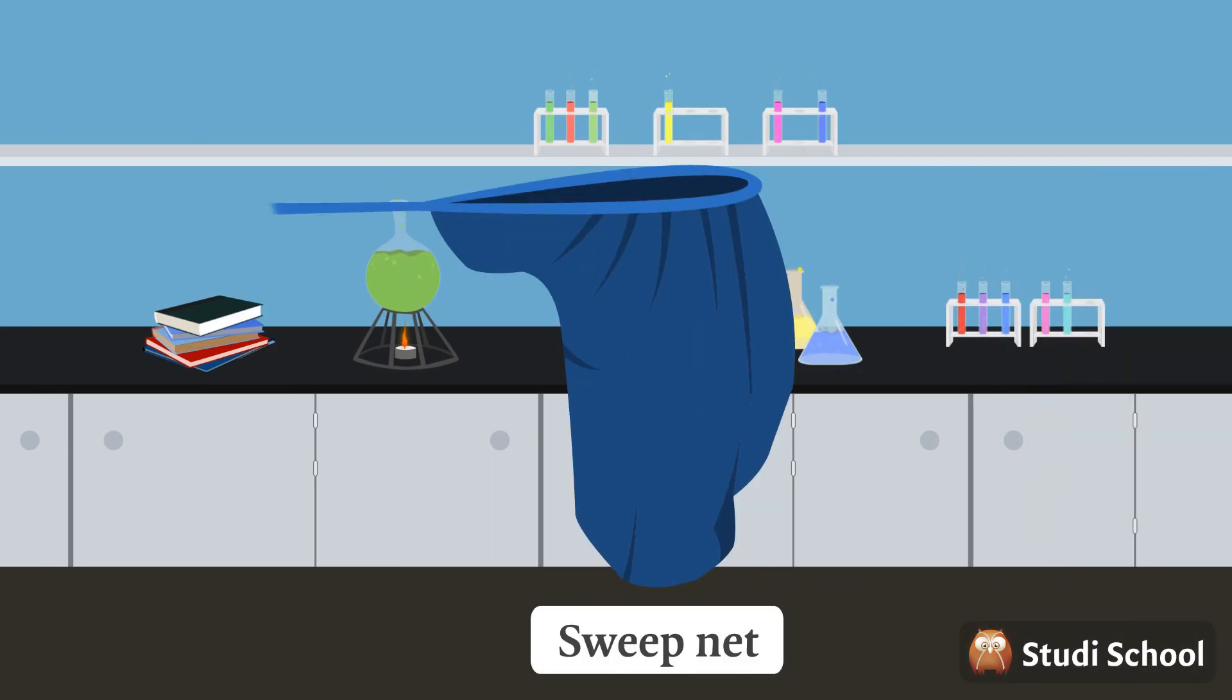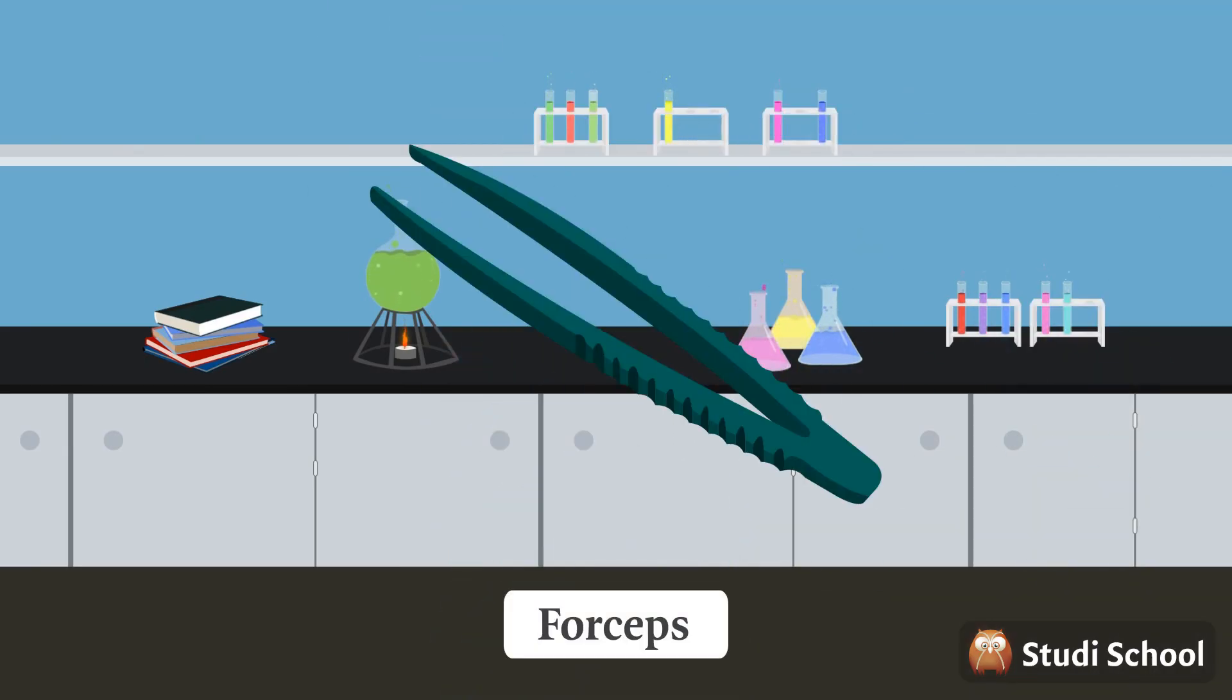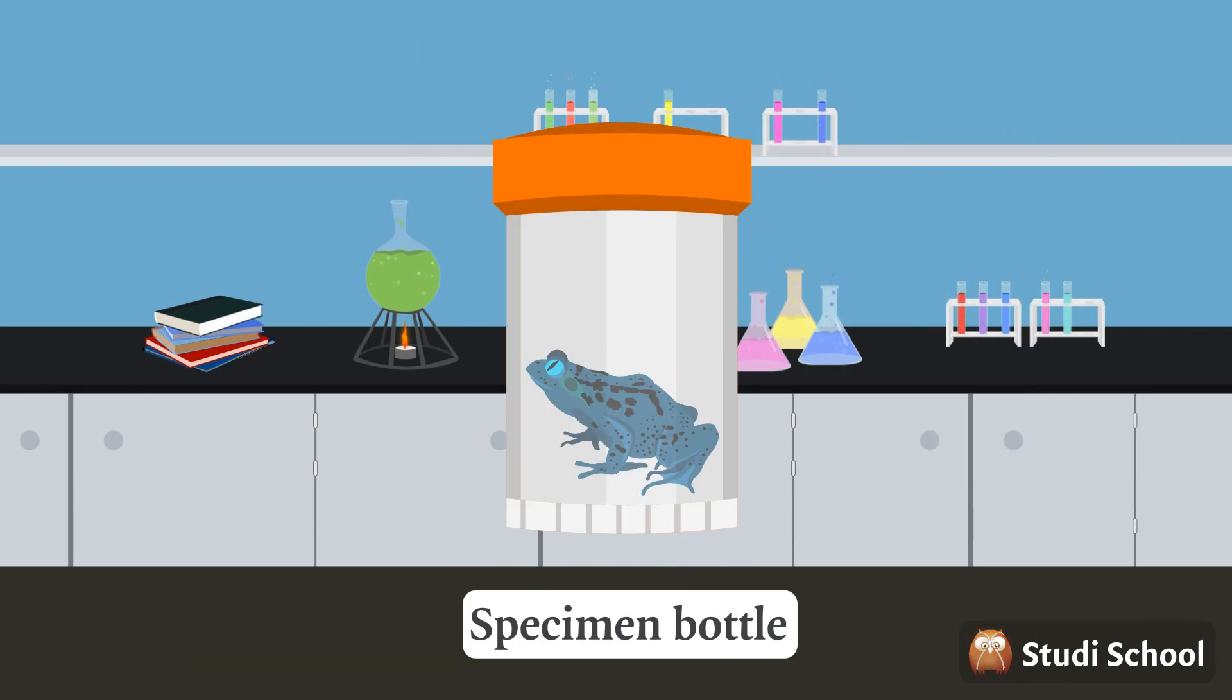This sweep net is used for catching flying animals such as insects. These are called forceps and are used to pick up dangerous small animals. This is a specimen bottle that is used to store and preserve collected animal or plant specimens.